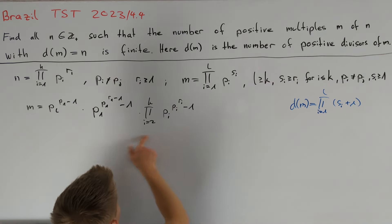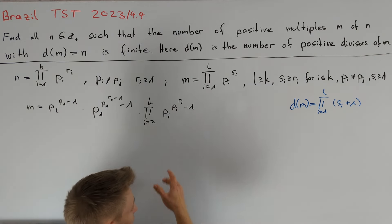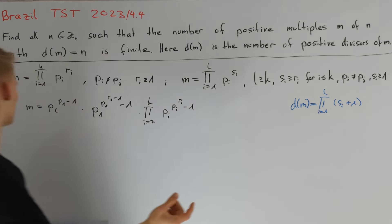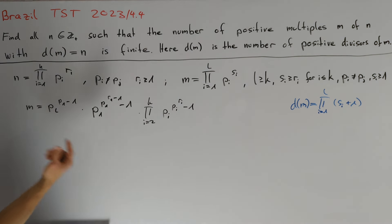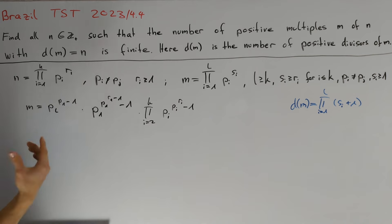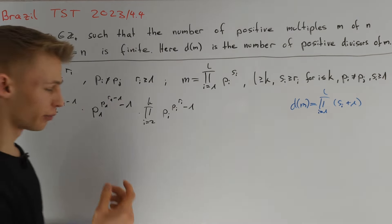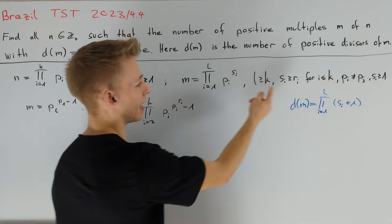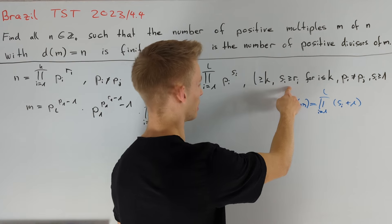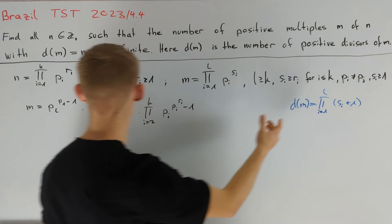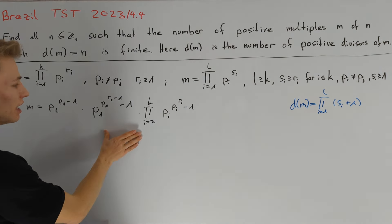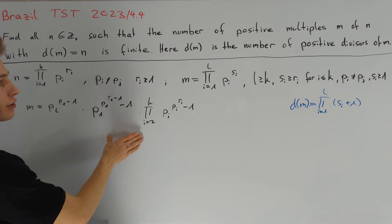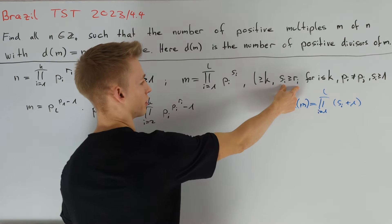If this construction works, there are infinitely many such values for m because there are infinitely many prime numbers pl. However, it is not guaranteed that this construction always works, because we already established that for such a value of m, si must be greater than or equal to ri.